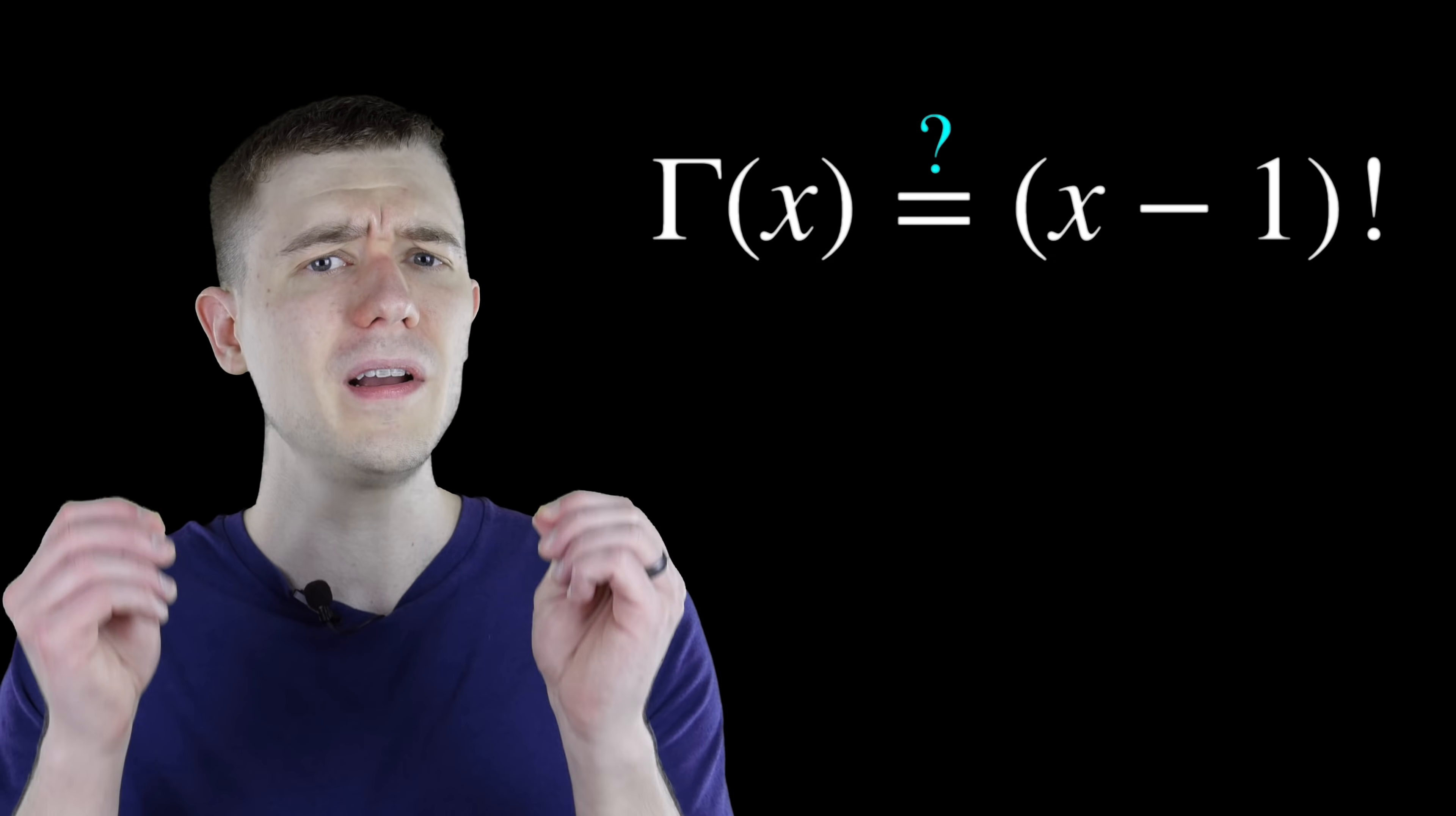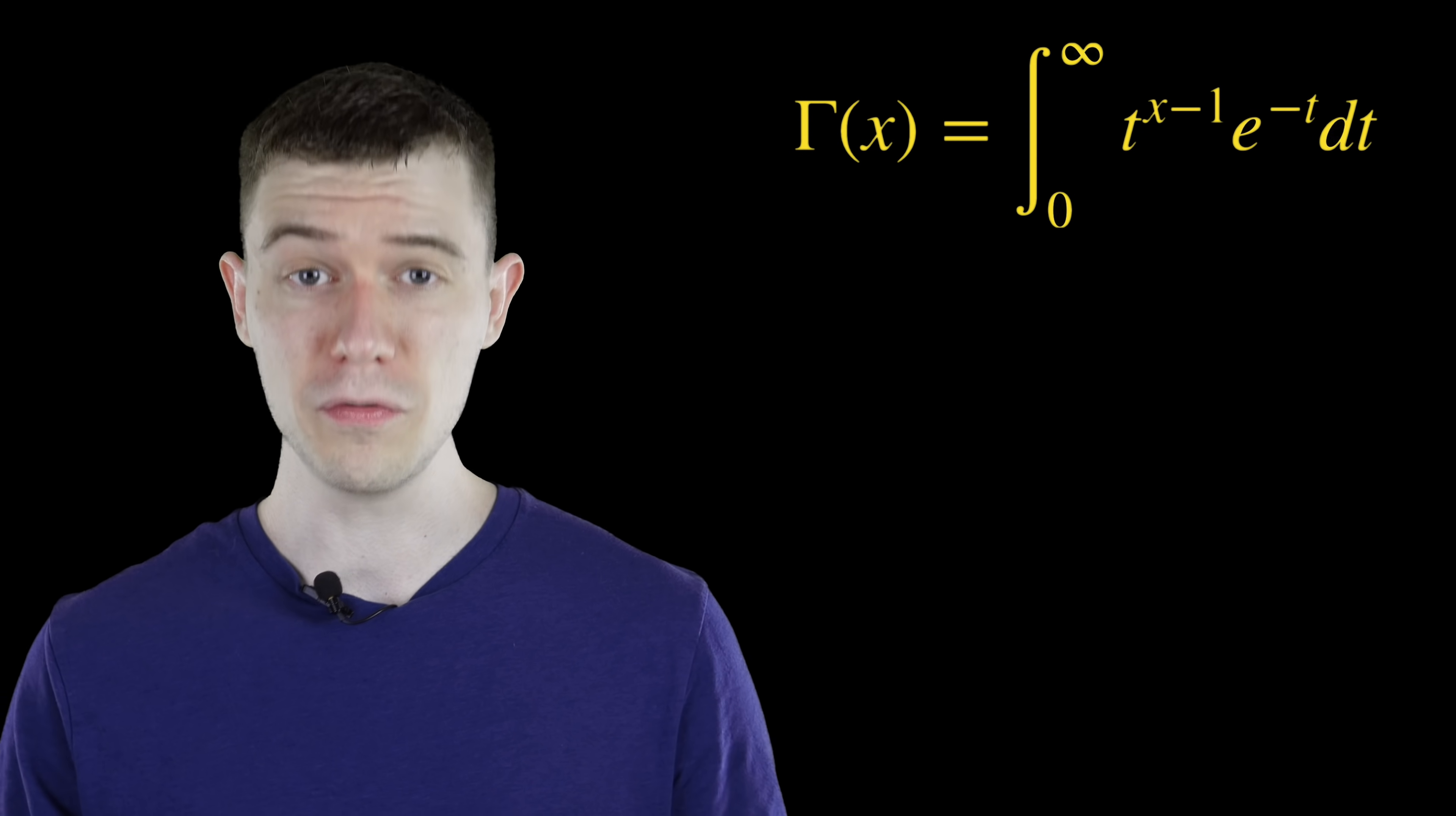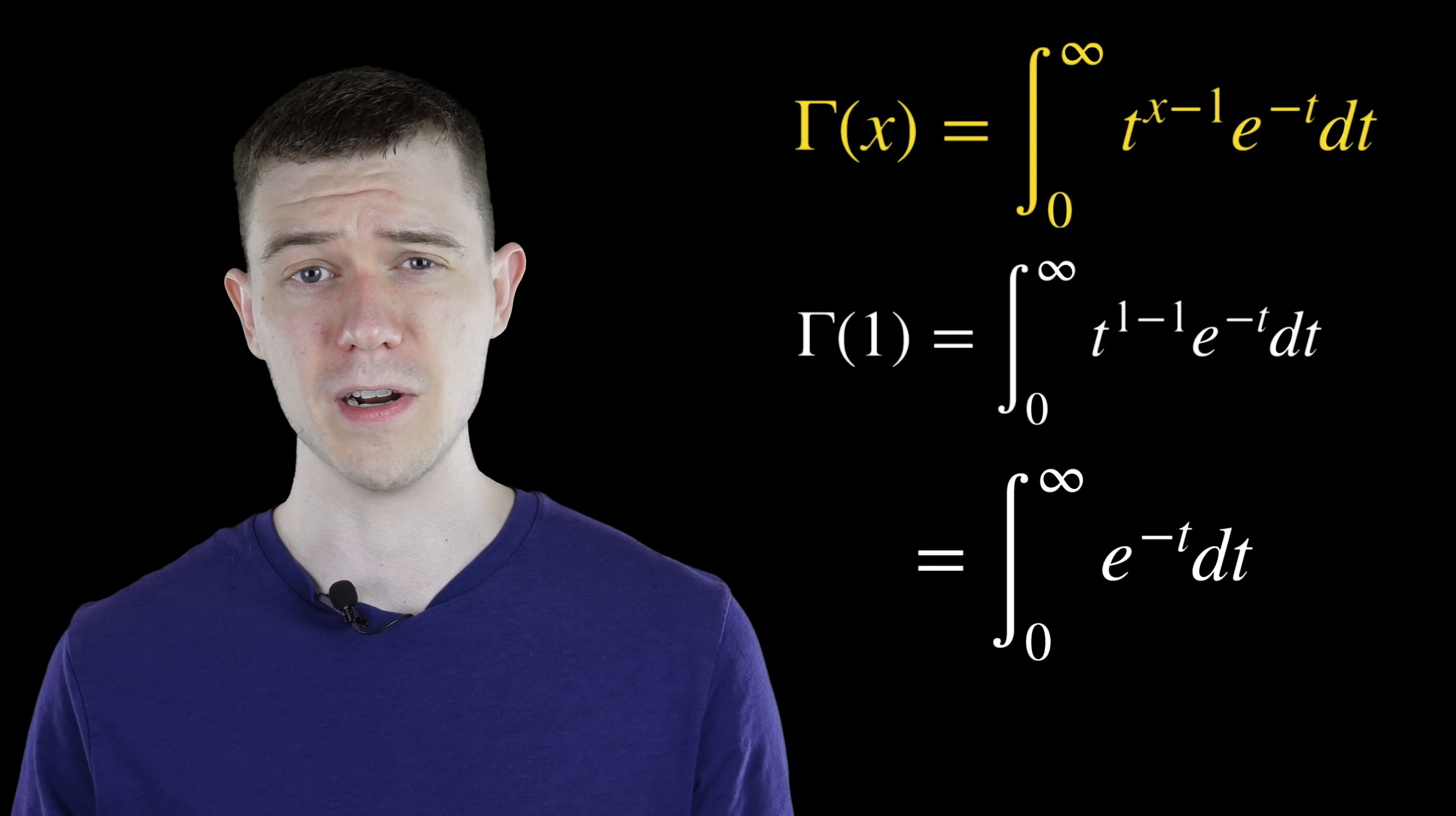So if we plug in 1 to this function, we want it to be 0 factorial, which is 1. Let's check this. Plug in 1 for x. We'll get t to the 0. That's 1, so it goes away. And now we just need to solve this improper integral.